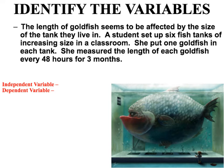The independent variable is the one thing that changes between the groups. In this case, the one thing that's changing is that the fish tanks are different sizes, so that'll be our independent variable. Our dependent variable is what is being measured, counted, or observed during the experiment, and this is going to be the length of each goldfish.